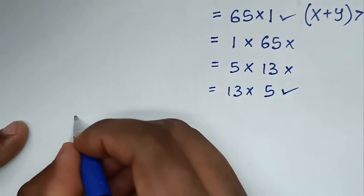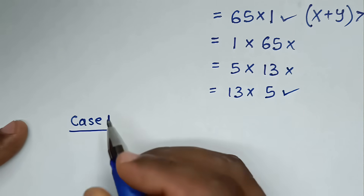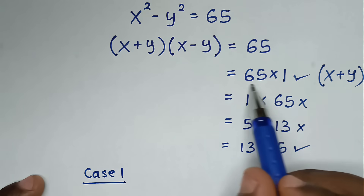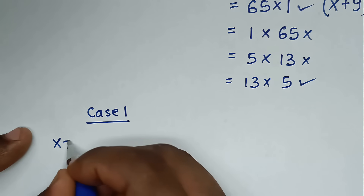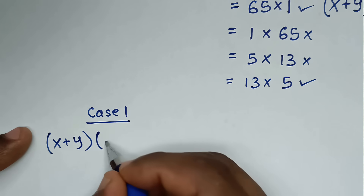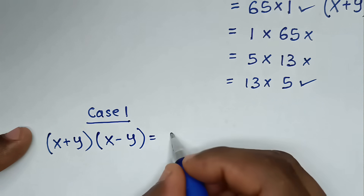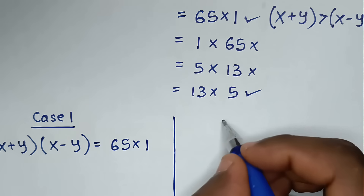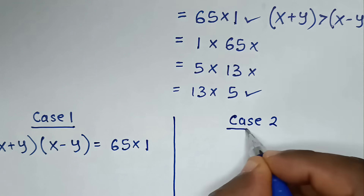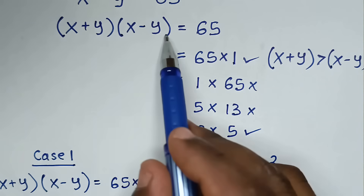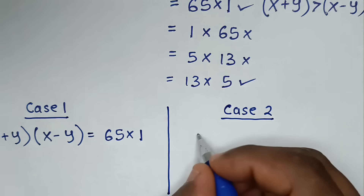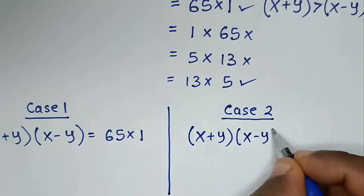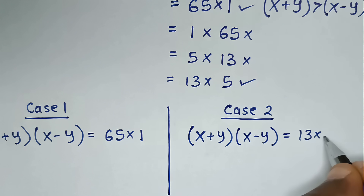So we have two valid cases. Case 1: (x plus y) times (x minus y) is equal to 65 times 1. Case 2: (x plus y) times (x minus y) is equal to 13 times 5.